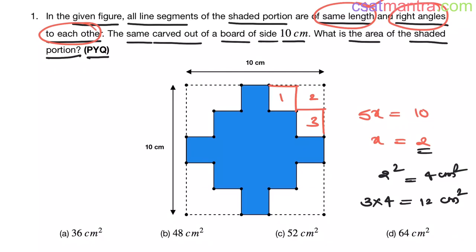We have 4 such corners — 1, 2, 3, 4. So, 4 into 12, that is 48 centimeter square.